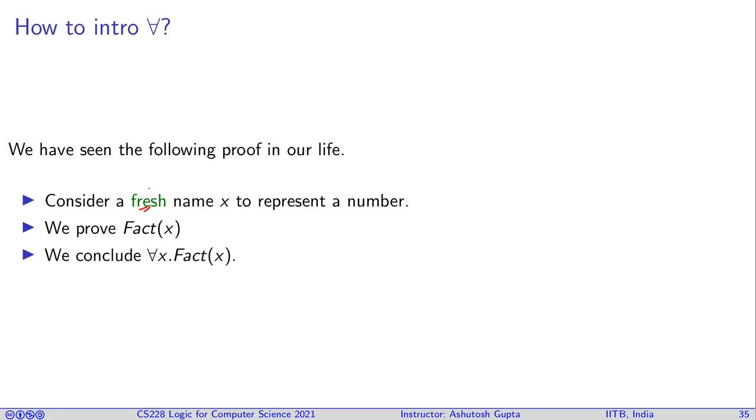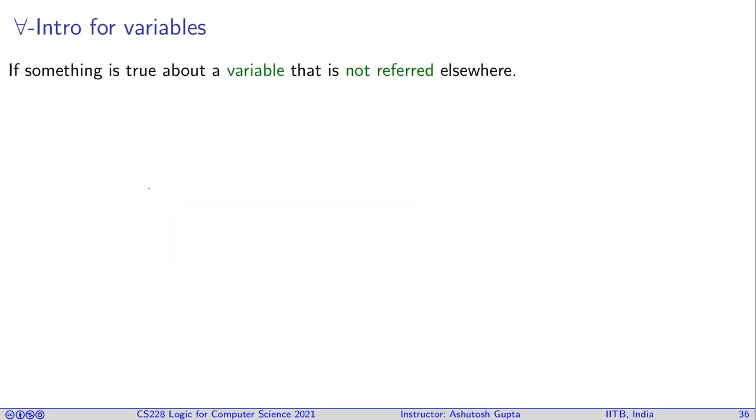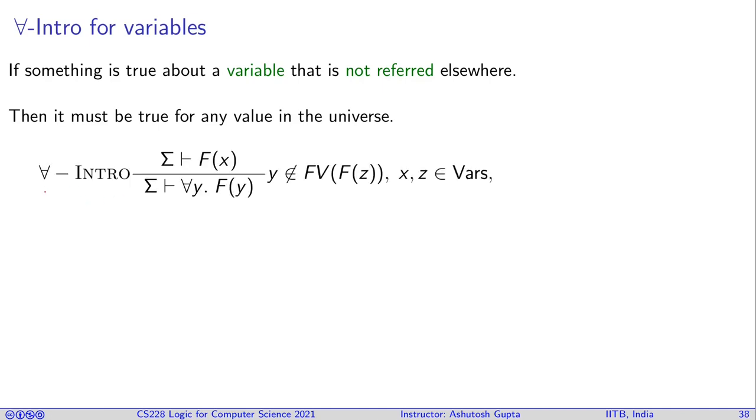So, this fresh choice basically represents the ability to introduce for all. So, how can we translate that as a proof rule? So, the simple requirement would be that that variable is not referred anywhere else. That will be the trick. And then it must be true for every value in the universe. So, that is the for all intro.